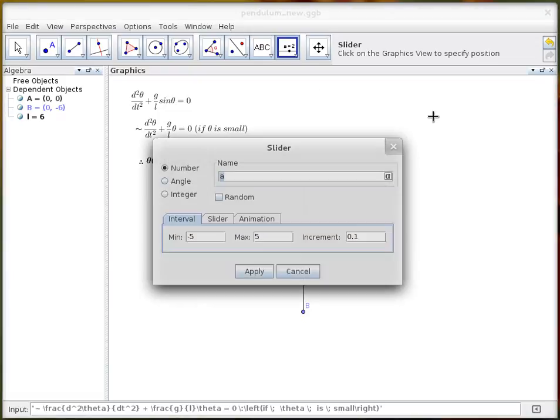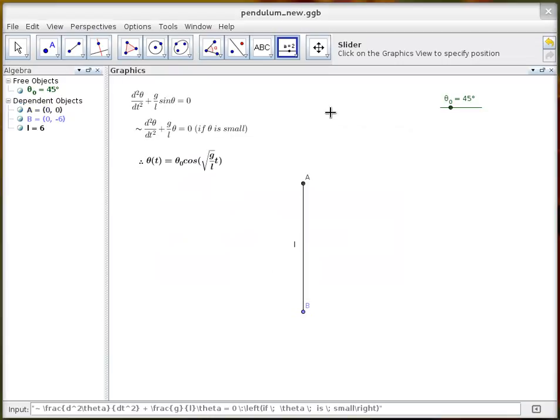The first slider I'm going to make it an angle and then we'll call it theta underscore zero and make it run from zero to 180 and the rest of those settings are fine, so click apply.